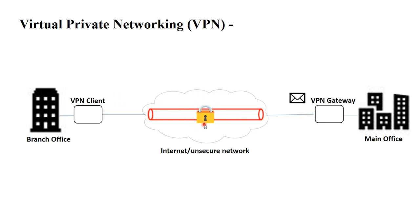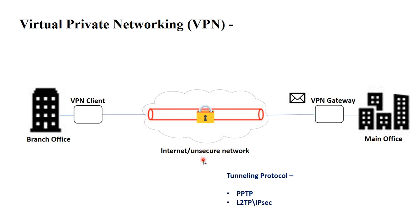This helps ensure confidentiality of data as it travels over a shared or public network. Data is encrypted at the sender and decrypted at the receiver, because data encryption is performed by the VPN client and the VPN server. There are two tunneling protocols mainly used in VPN: Point-to-Point Tunneling Protocol (PPTP) and Layer 2 Tunneling Protocol (L2TP).